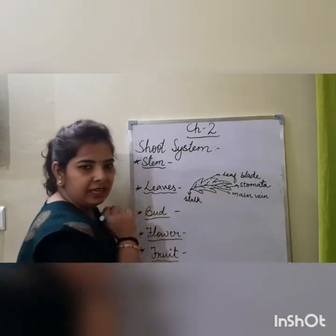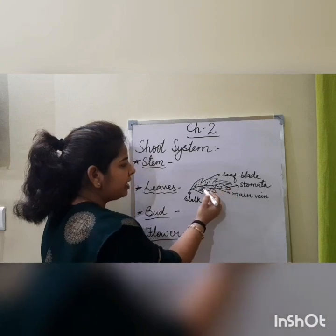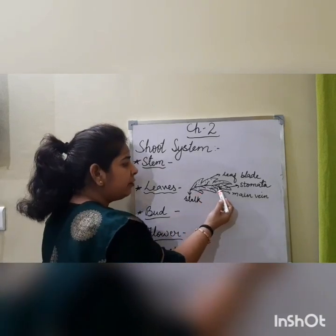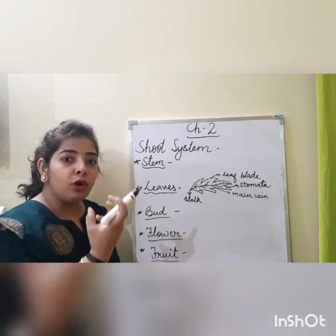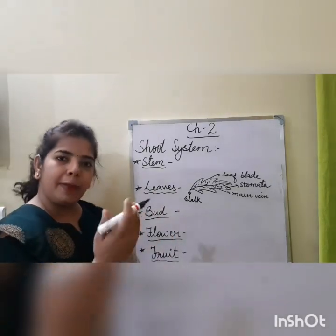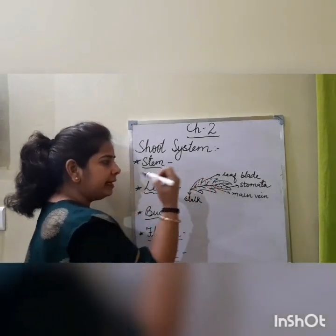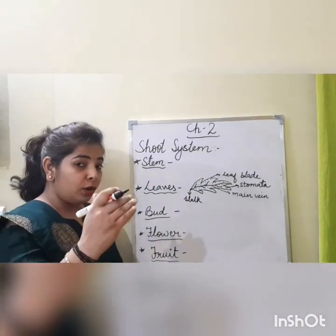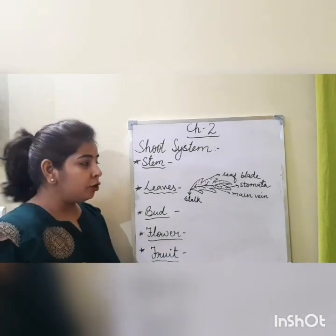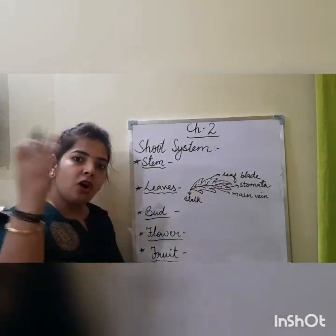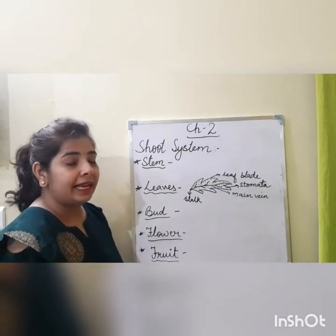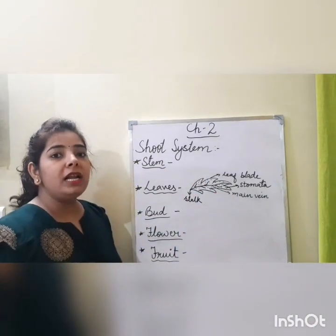The main vein passes the food prepared by the leaves to the stem and other parts of the plant. Stomata are the small pores through which the plant takes in carbon dioxide needed to prepare food, and after food is prepared, it exhales oxygen. So gas exchange is done by these small pores called stomata.